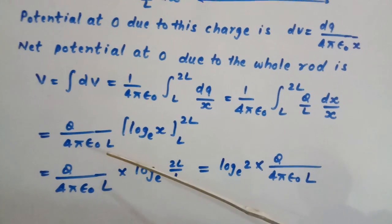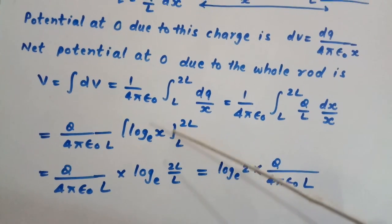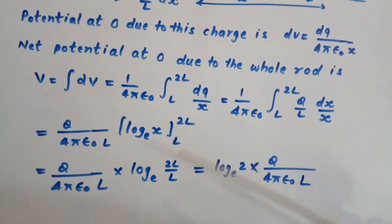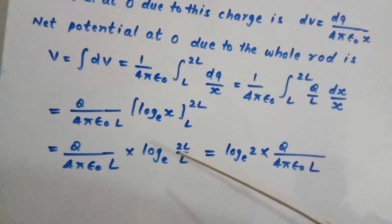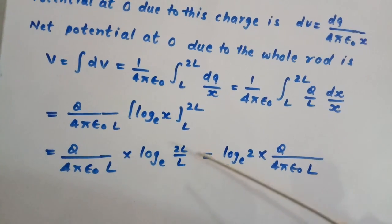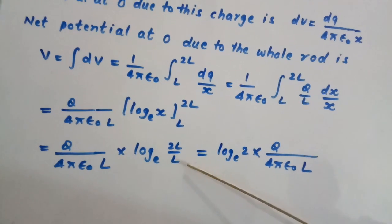So we get Q upon 4πε₀L times log x base e, L to 2L, which simplifies to capital Q divided by 4πε₀L times log base e of 2L upon L. L will cancel out and log 2 will be left.